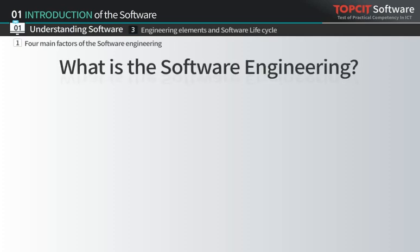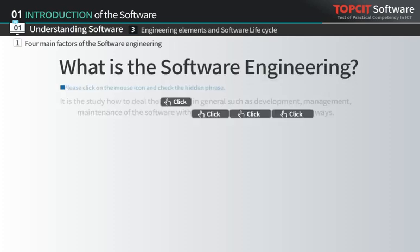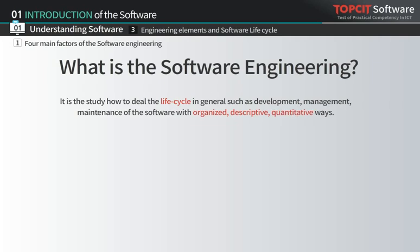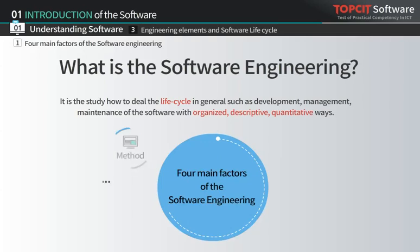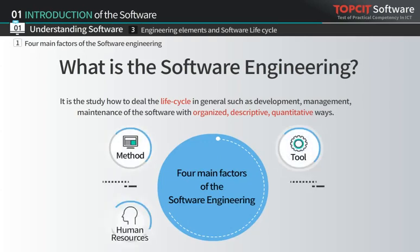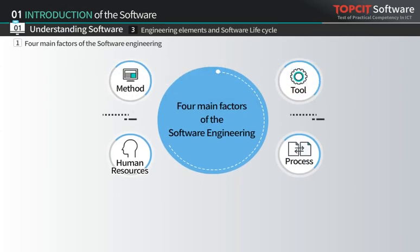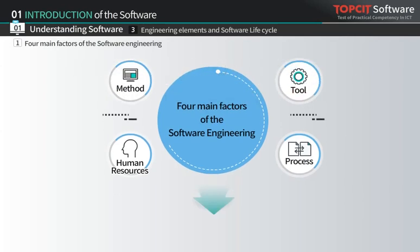What is software engineering? It is about the way to apply engineering to software. It is composed of four elements: method, tool, human resources, and process. These four elements enable the production of high-quality software and make it possible to develop within schedule.